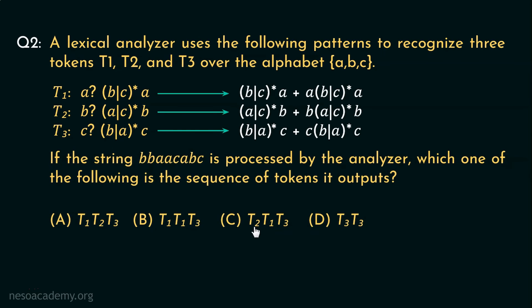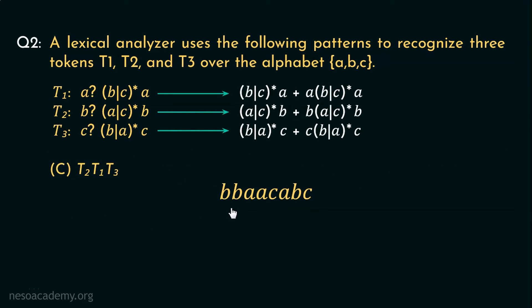Now next in line is T2, T1, T3. Let's consider that. Observe the string again. It's got two B's at the beginning. Now in case of T2, using this portion, we can generate B, B because B followed by nothing which is generated by this (A or C) whole star followed by B will give us two B's. Coming to T1, the string now has two A's in the beginning of its remaining portion. And from this regex portion of T1, we can generate two A's. That is, A followed by nothing from this (B or C) whole star followed by A.